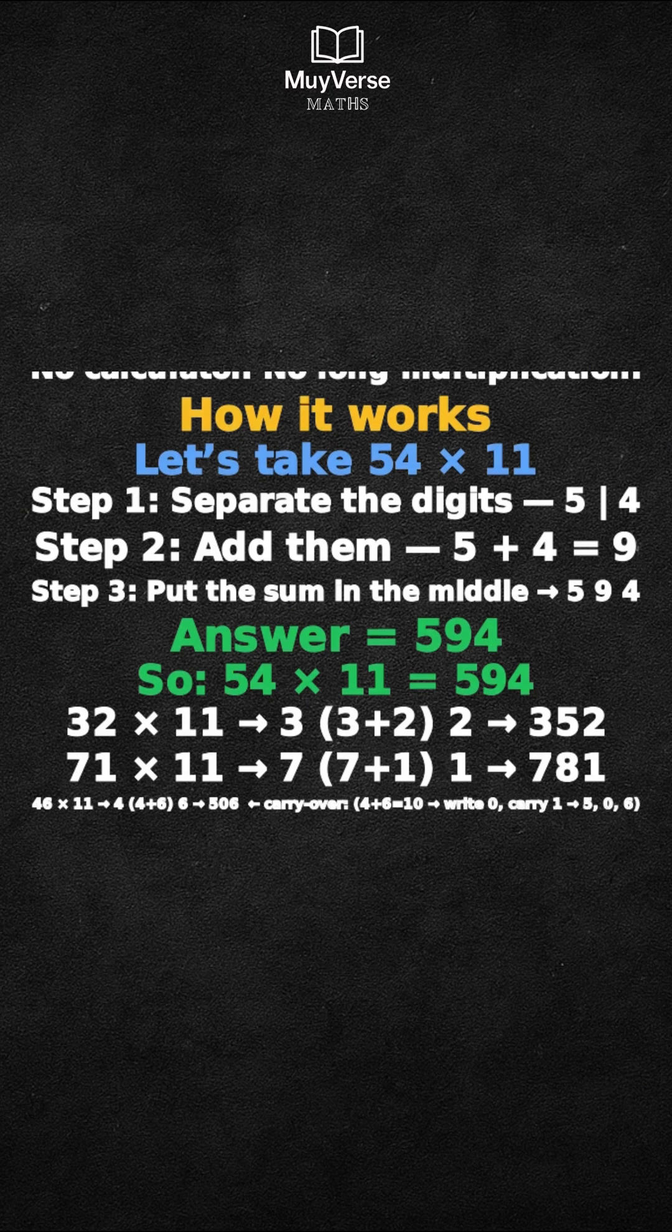71 times 11 becomes 7, 7 plus 1, 1 equals 781.